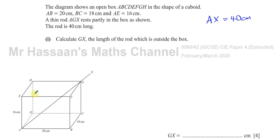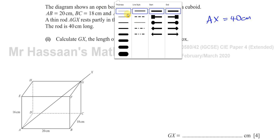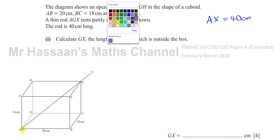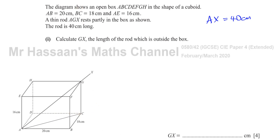This is a cuboid, so all the faces are rectangles. The length AG goes diagonally from one end of the box to the other. If I draw a line from A to C, that line forms a right angle triangle ACG. Why? Because the wall of the cuboid and the floor of the cuboid meet at right angles — just like the floor and wall in the corner of a room.